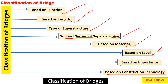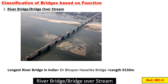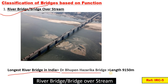Based on the function of the bridge: first, river bridge. When there is a river stream and a bridge is built across the river, it is called a river bridge. The longest river bridge in India is the Dr. Bhupen Hazarika bridge, with a length of 9.15 kilometers (9,150 meters), across the Brahmaputra river in Assam.